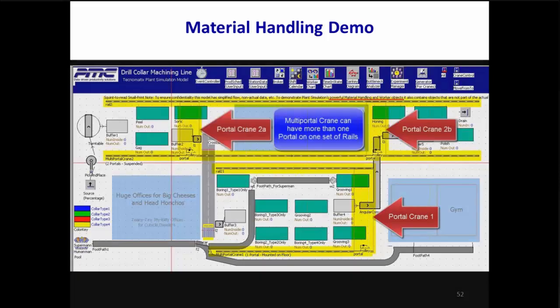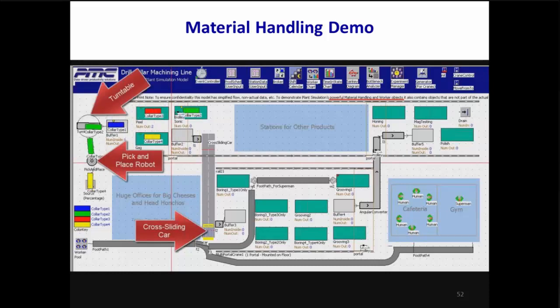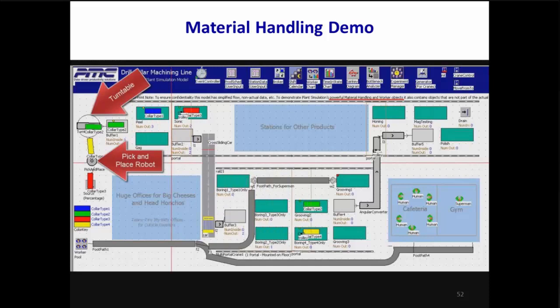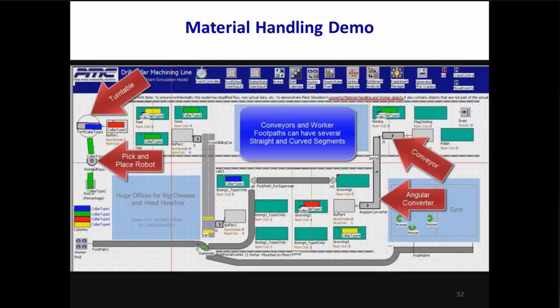Our next demo video will quickly show you several of these objects in action. This short video shows off several of Plant Simulation's great material handling objects, including three portal cranes moving on two sets of rails, delivering parts to stations depending on the part type and what the next station needs. You can also see a pick-and-place robot, a turntable, a cross sliding car, and an angular converter in action. Near the start of the simulation, you may also notice workers moving along a curved footpath at the bottom of the screen. Note that you can always open a 3D window at the click of the mouse and watch the action in 3D too.